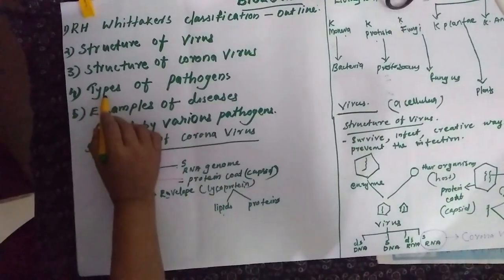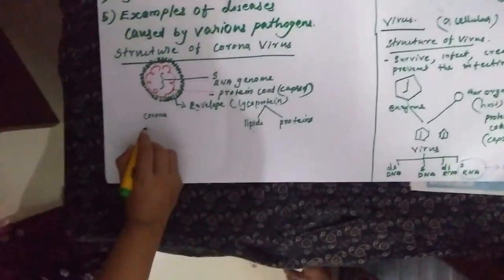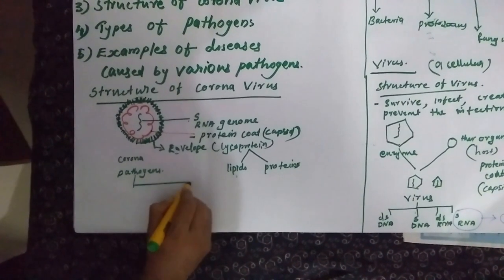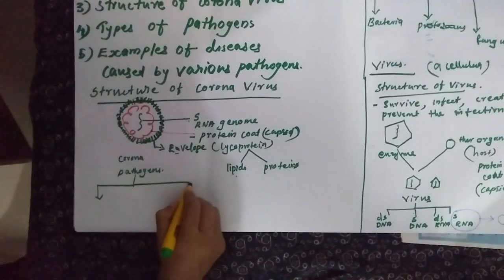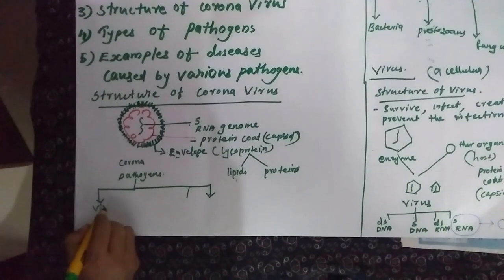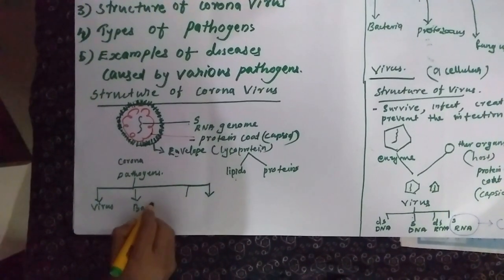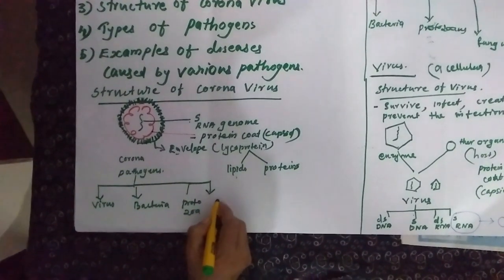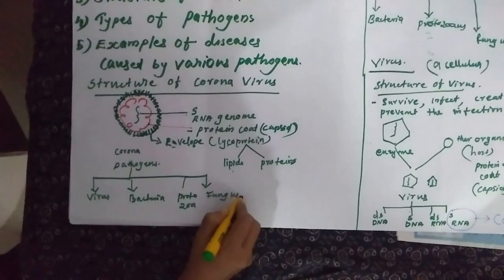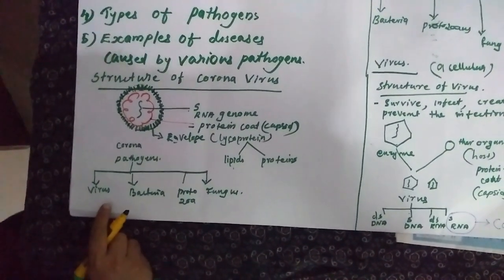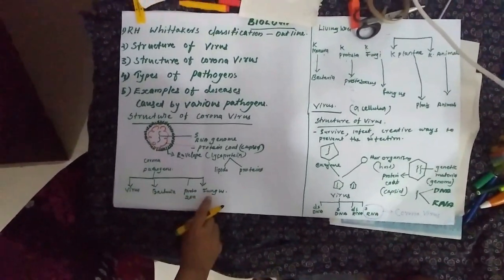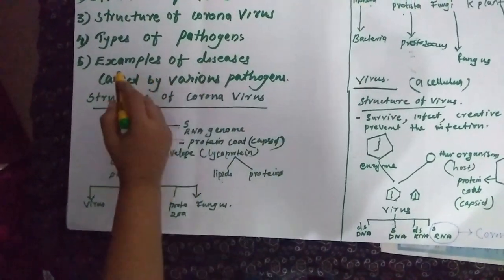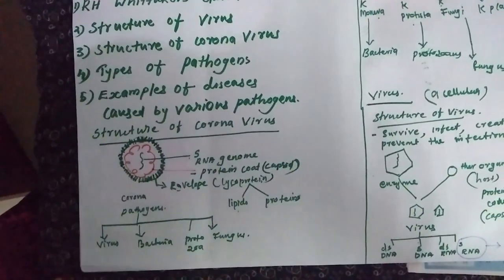The next topic is types of pathogens. There are different types of pathogens: first, virus; second, bacteria; third, protozoa; and fourth, fungus. These organisms cause diseases, so they are known as pathogens. And the last topic is: what are the examples of diseases caused by various pathogens?